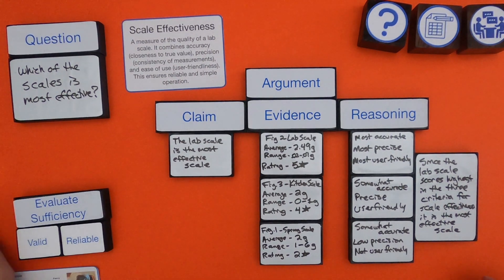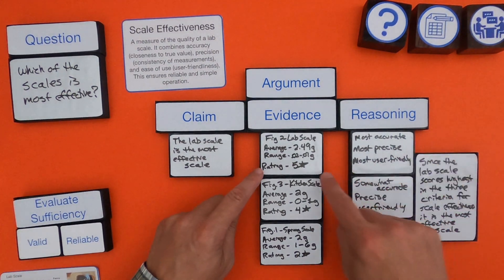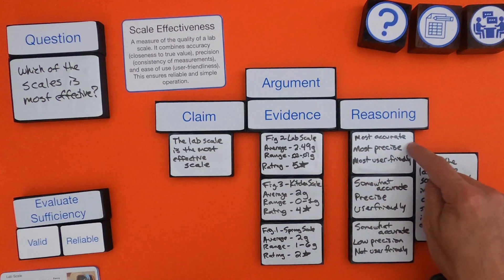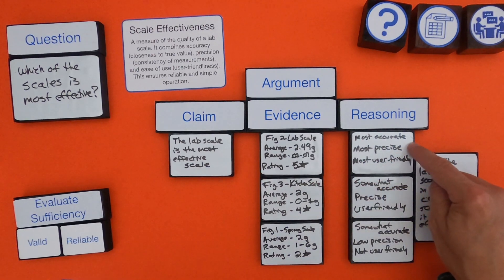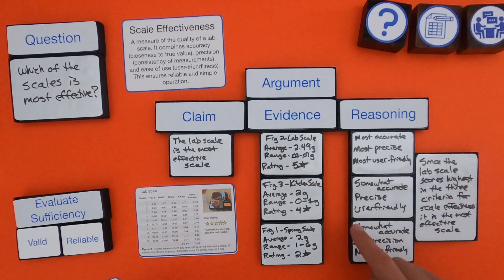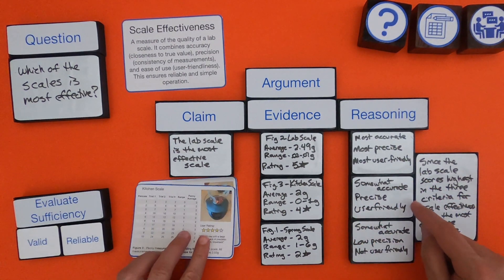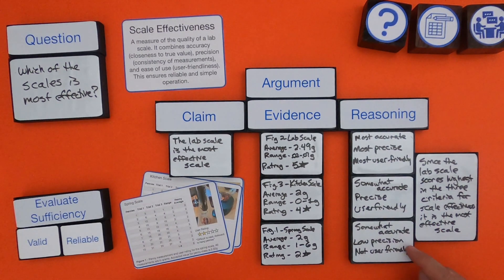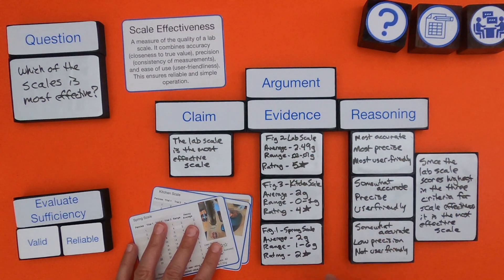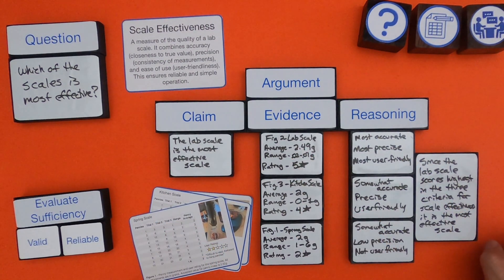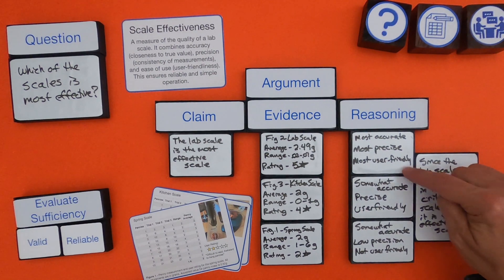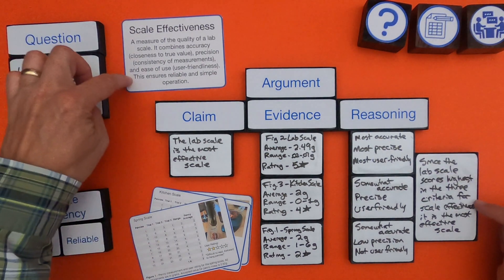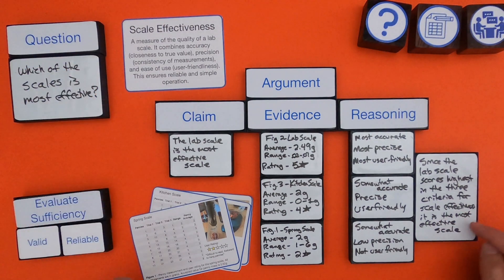As I summarize the reasoning: the lab scale is the most accurate, the most precise, and the most user-friendly. The kitchen scale is somewhat accurate, precise, and user-friendly. The spring scale is somewhat accurate, has low precision, and is not user-friendly. Since the lab scale scores highest in the three criteria from our definition of scale effectiveness, it is the most effective scale.